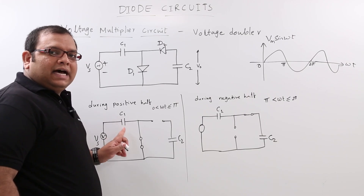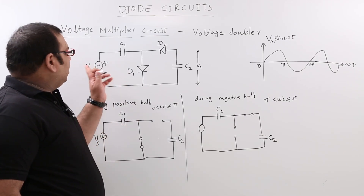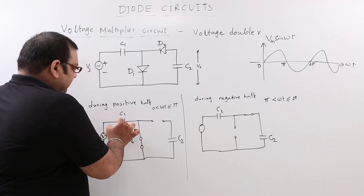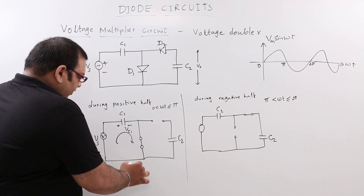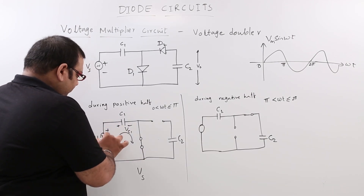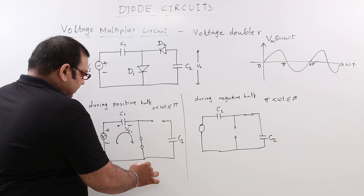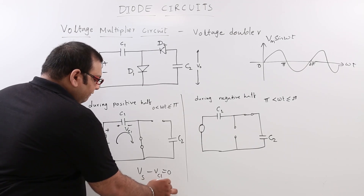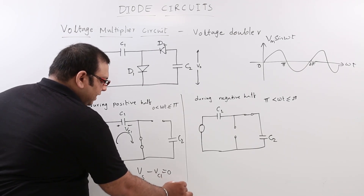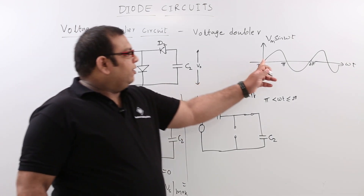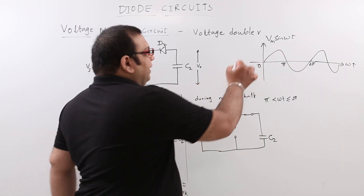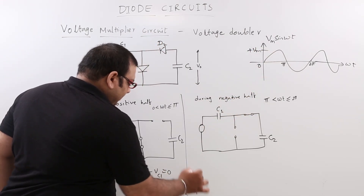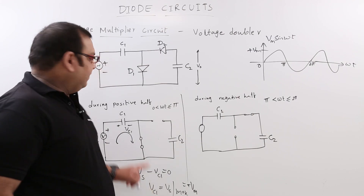C1 will charge to the maximum value of the input. Taking the loop equation, with VC1 as the capacitor voltage, we write: Vs - VC1 = 0, so VC1 = Vs. During the positive half, the positive peak is +Vm, so C1 charges to +Vm at this point.